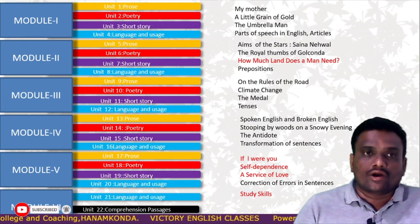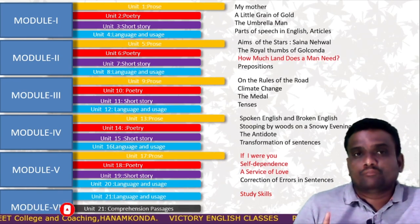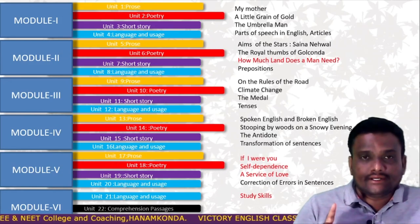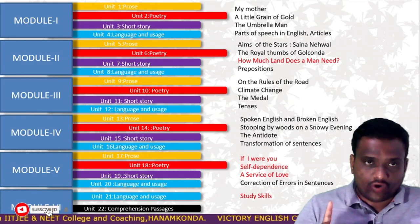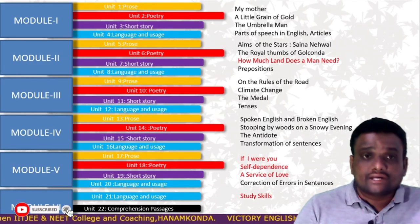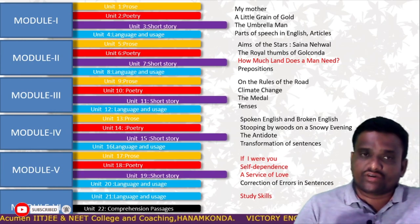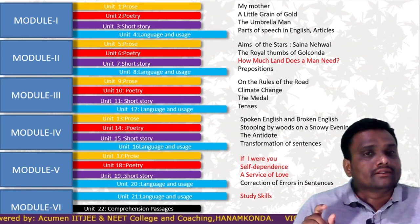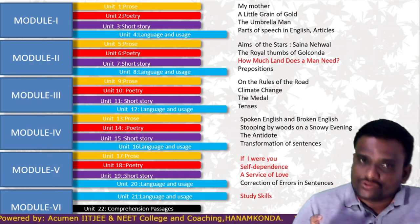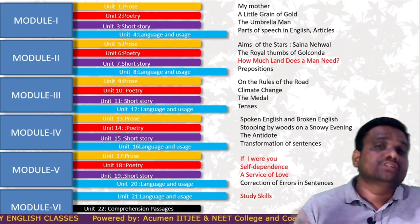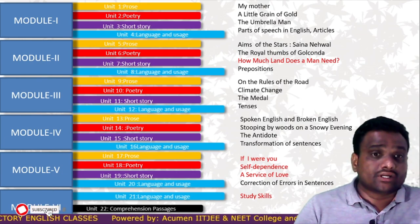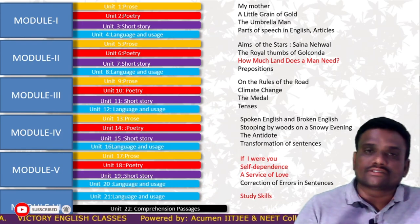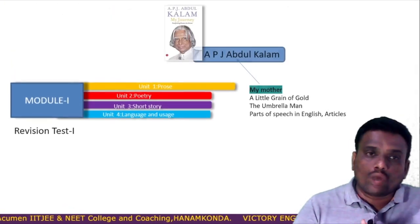Each of the first five modules has one prose, one poetry, and one short story. The unit language and usage is given to all six modules. But the sixth one is different for having comprehension passages. Let's get into module one.